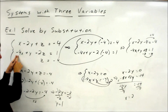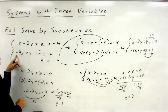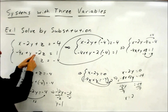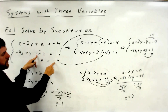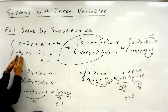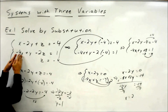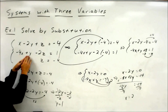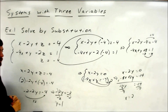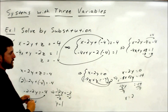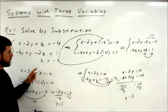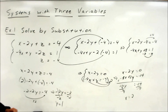For the second equation: negative 4 times 2 is negative 8, plus y which is 1, minus 2 times negative 4 is positive 8. So negative 8 and positive 8 cancel, and we're left with 1 equals 1. The third equation says z equals negative 4 — it's already solved. So we see that these values do work in all three equations.